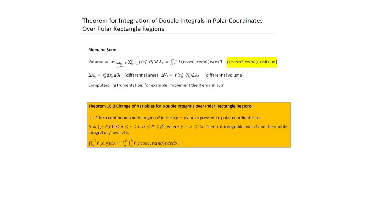We'll start with the theorem for integration of double integrals in polar coordinates over polar rectangle regions. This is going to be a Riemann sum, but this Riemann sum is now in terms of different coordinates. And so the expression, although looking similar, the details will be a little bit different.